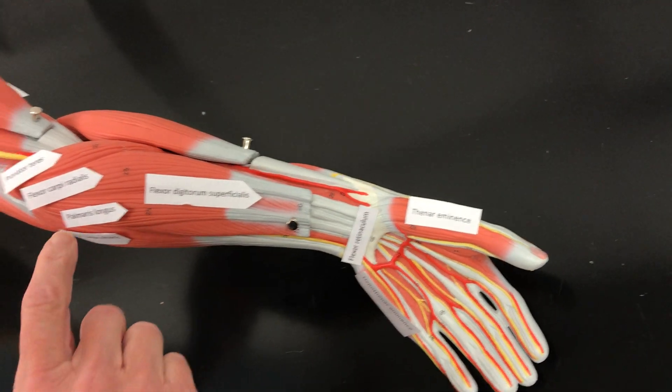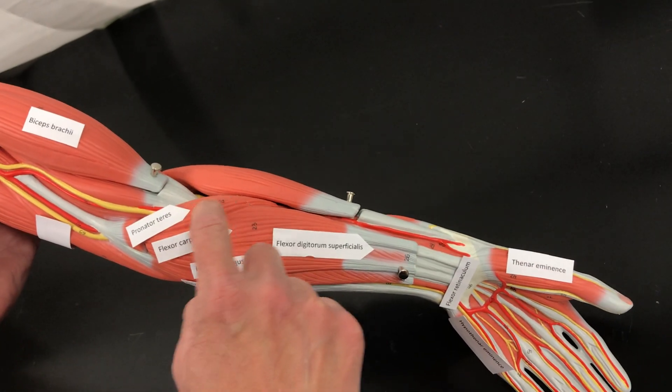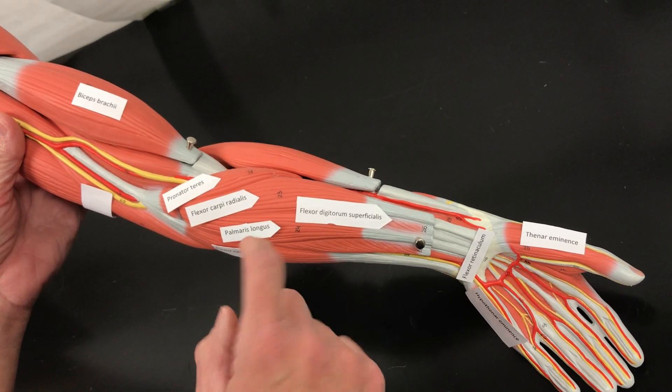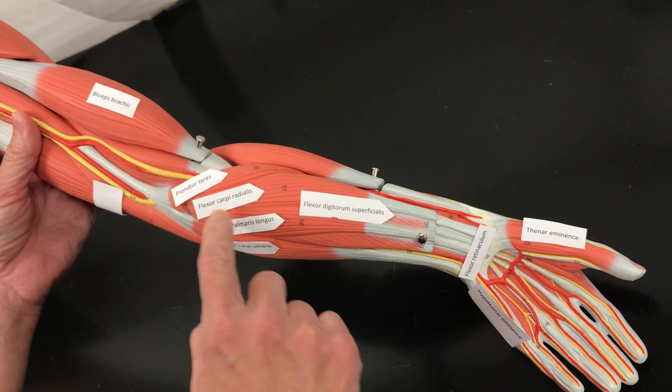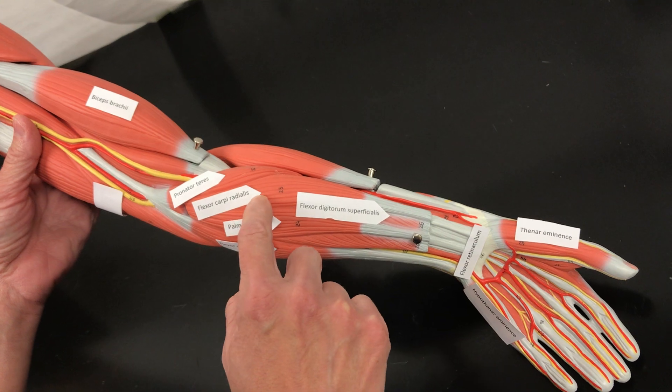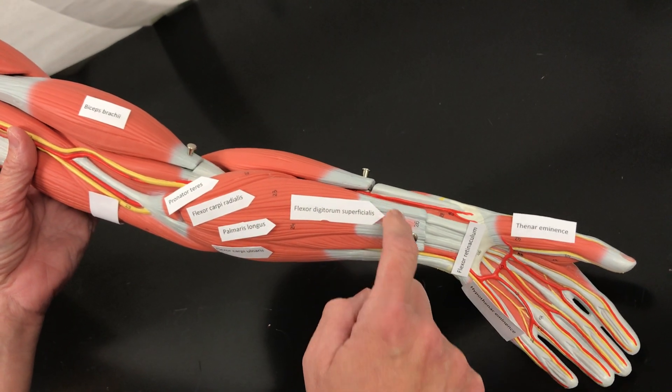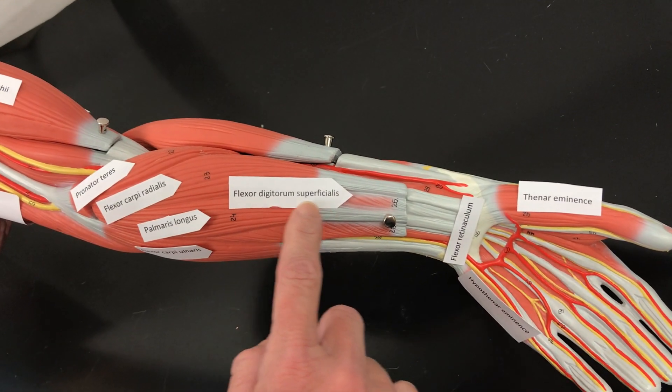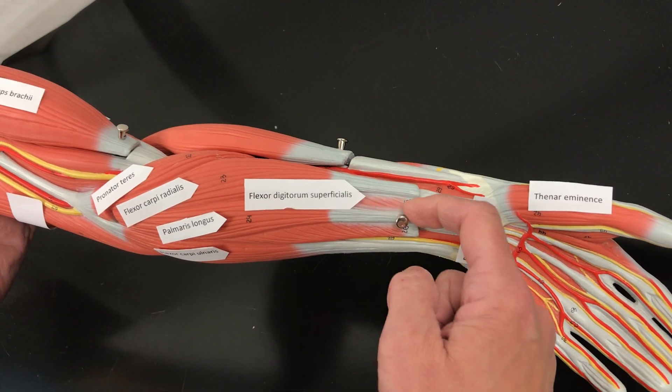Then underneath we have the pronator teres, this one helps turn your arm. Then we have the flexor muscles. We have the flexor carpi radialis, it's on the radial side. The flexor digitorum superficialis, it's underneath here.